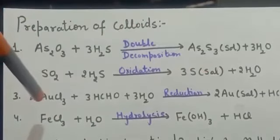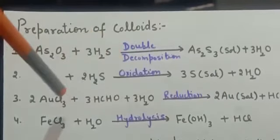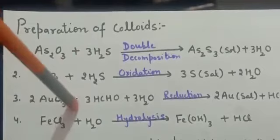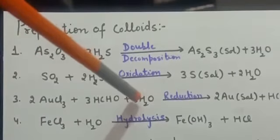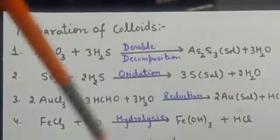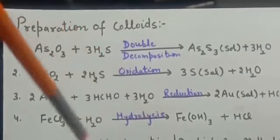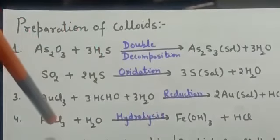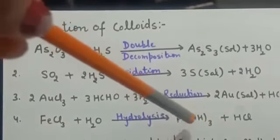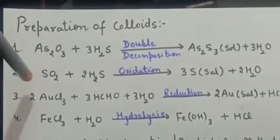Third, if we want to prepare the sol of gold, it can be prepared by the reduction method — gold chloride reacts with formaldehyde in the presence of H₂O to give gold sol. Fourth, colloids can be prepared by hydrolysis reaction: FeCl₃ (ferric chloride) in the presence of H₂O gives the colloid of Fe(OH)₃, that is ferric hydroxide. So these are the four chemical methods for preparing colloids.